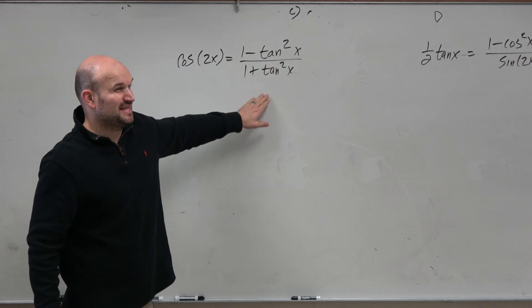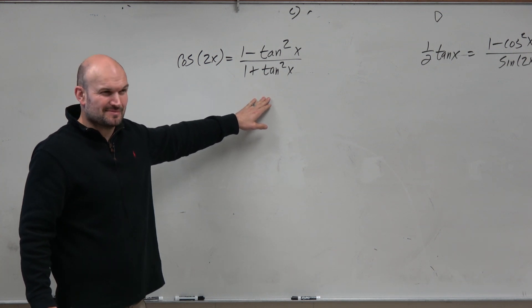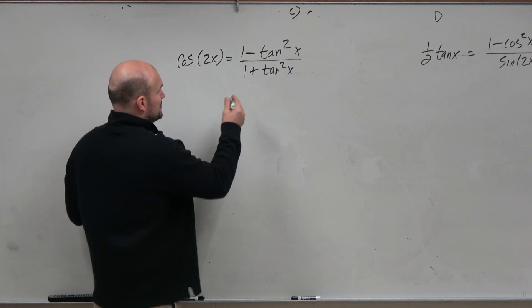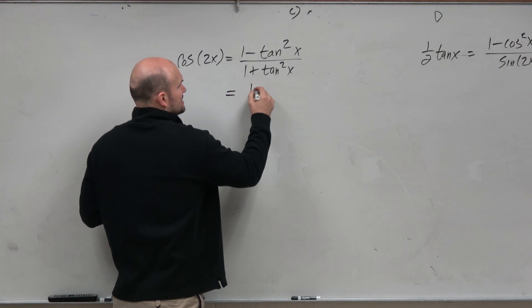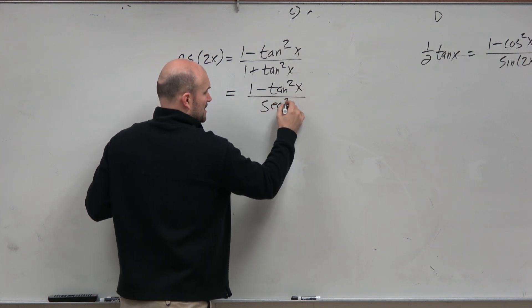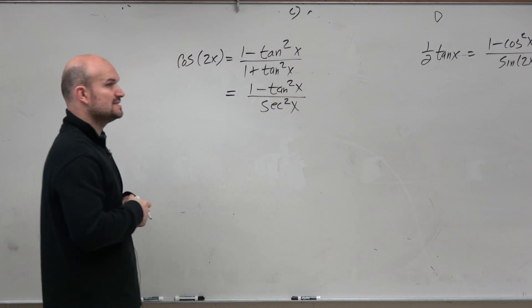I don't really want to multiply by the conjugate. That's going to give me tangent to the fourth. That kind of seems a little confusing for me, right? At least not a direction I want to head into. So why don't I just rewrite this as 1 minus tangent squared of x using the Pythagorean identity, which is, again, on my paper provided to me. That gives me secant squared.